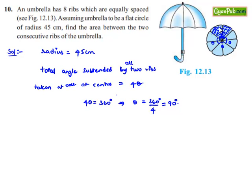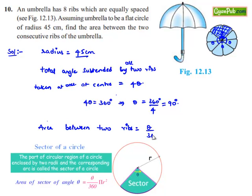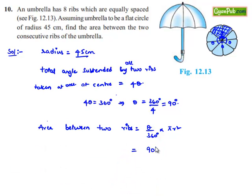If we observe the two ribs, they form a sector subtending an angle of 90 degrees at the center, and the radius is 45 centimeters. Therefore, we can find the area between two ribs. The area of a sector is given by theta divided by 360 degrees, multiplied by pi r squared. Here theta is 90 degrees, pi is 22/7, and the radius is 45 centimeters.